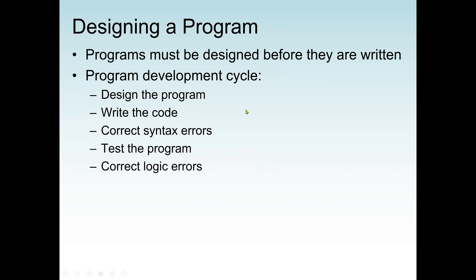First, design your program. Anytime we want to develop or implement a program, we don't just start writing code straightforward. The first thing we should do is come up with the design and planning. We should know what our input is and what should be the output. The designing process is converting the input to an output.